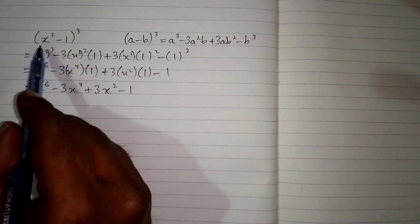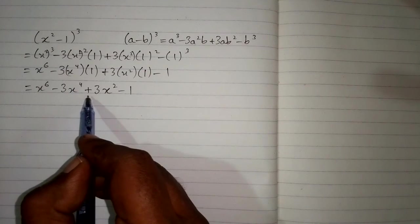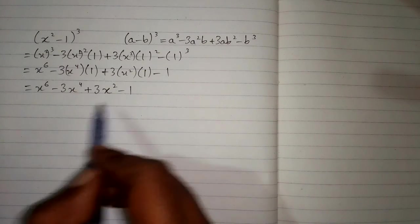So the cube of x² - 1 is x⁶ - 3x⁴ + 3x² - 1.